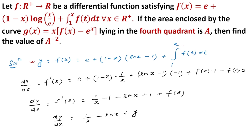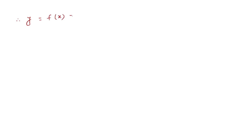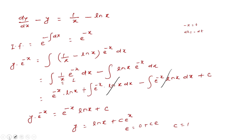To find the constant c, we put x = 1. At x = 1, the integral from 1 to 1 is equal to 0. So f(1) = e + 0 = e. Also at x = 1, y = ln(1) + c·e^1 = 0 + c·e = e. Therefore c = 1. So we now have the complete solution: y = f(x) = ln x + e^x.